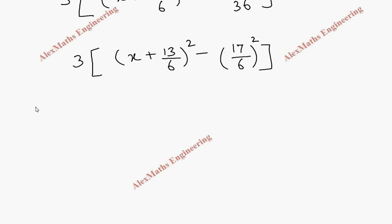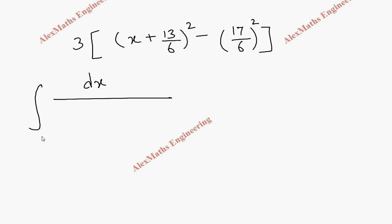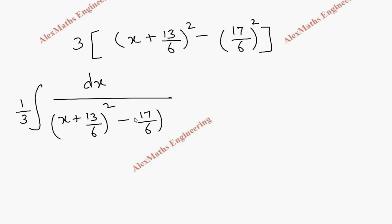In the denominator we have (x + 13/6)² minus (17/6)², which is of the form x² minus a². In the previous video we discussed the formula for this case.